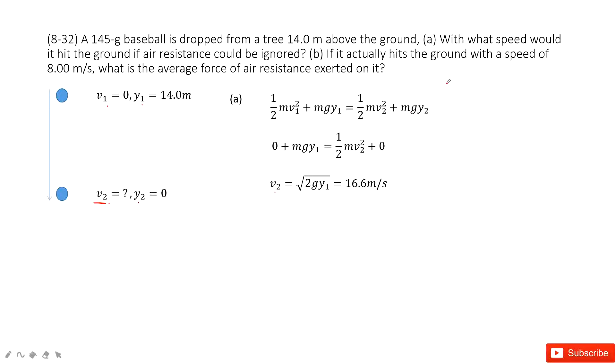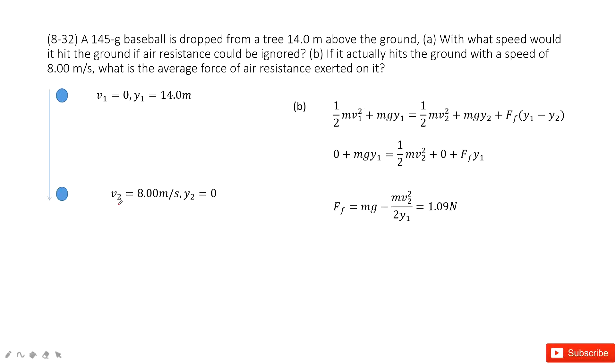The second one, if we consider the average force of air resistance. So this time, we need to consider air resistance force. It tells us final velocity V2 is 8 meters per second. We consider air resistance force. That means we need to consider the thermal energy.